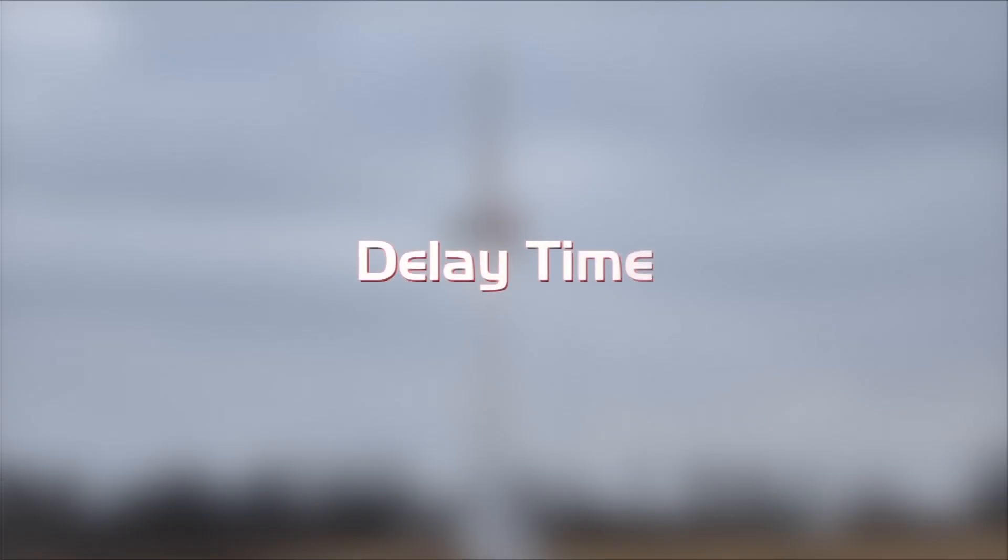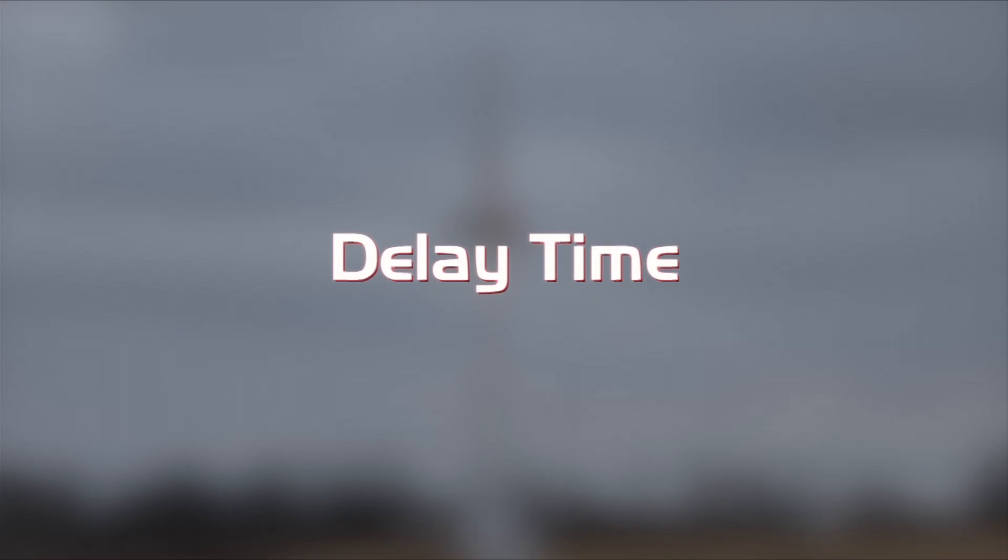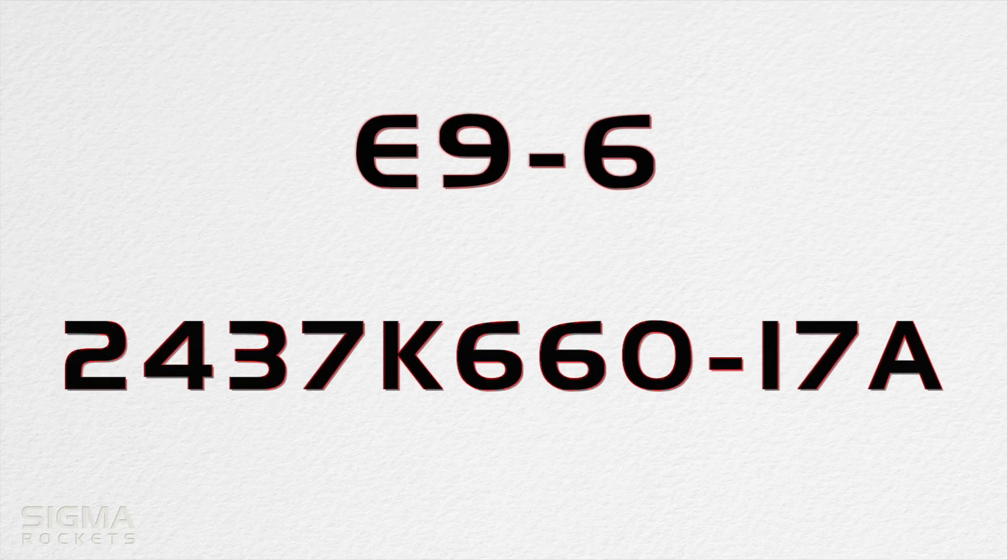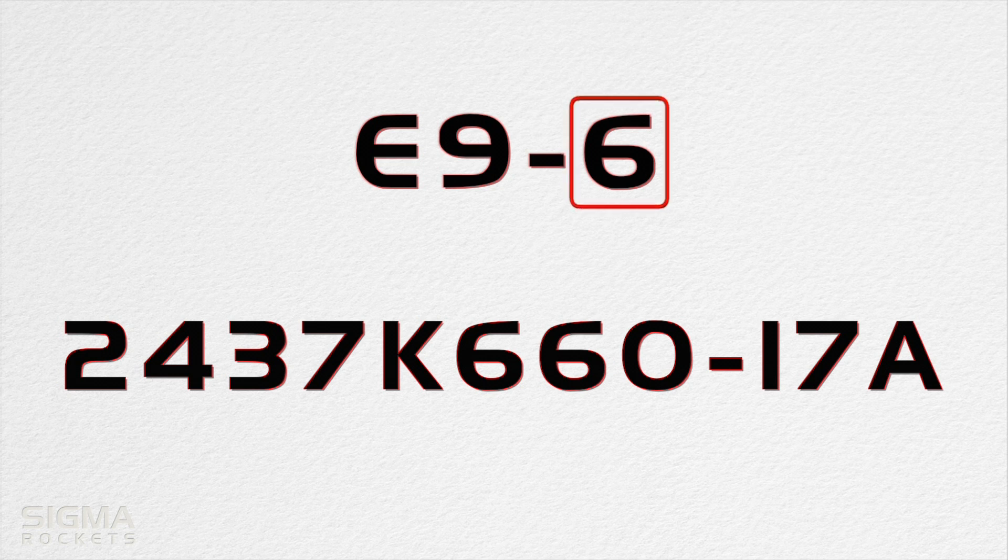The final number in the rocket motor designation is the delay time that occurs after the thrust of the motor and before the ejection charge. An A may be present, indicating that the delay is adjustable.